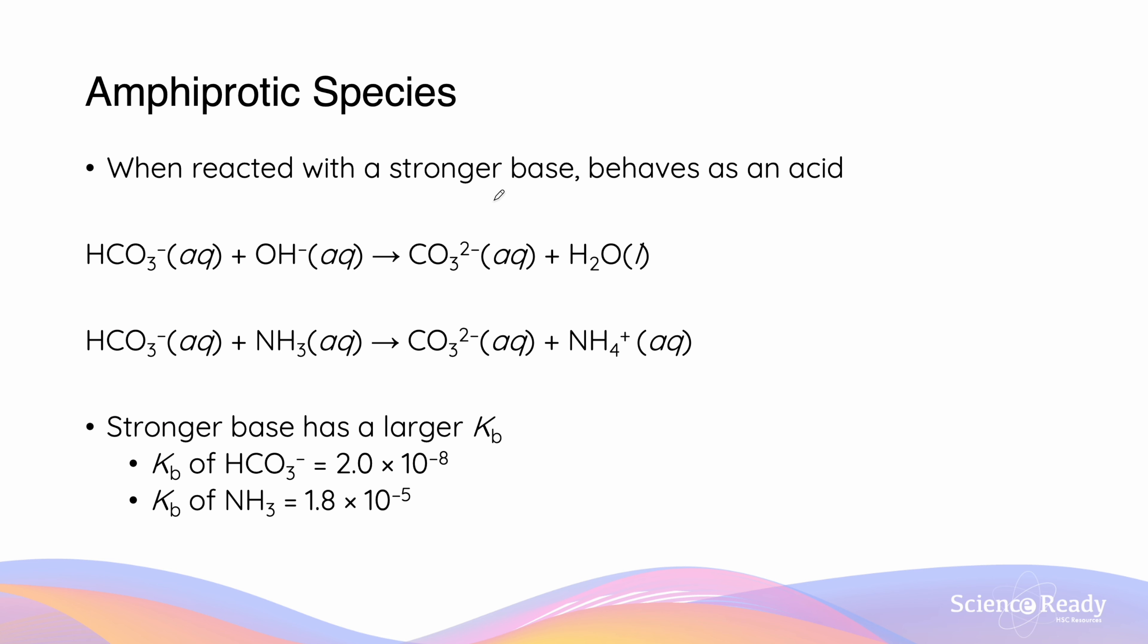The hydrogen carbonate will act as an acid when reacted with a stronger base. If we look at this example, we can see that the Kb of NH3 is higher than the Kb of HCO3-. Because NH3 has a higher Kb, it means that it is a stronger base. When we look at the reaction between the hydrogen carbonate ion and ammonia, this will act as an acid to form an ammonium ion and a carbonate anion.